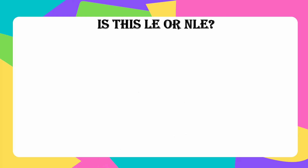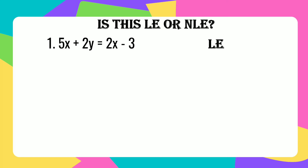Let's answer the following: is this a linear equation in two variables or not? Number 1: 5x plus 2y equals 2x minus 3. This is a linear equation in two variables.